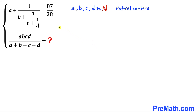Welcome to pre-math. In this video we have a system of equations: a plus 1 divided by b plus 1 divided by c plus 1 divided by d equals 87 divided by 38, where a, b, c and d are natural numbers. We are going to find the value of a times b times c times d divided by a plus b plus c plus d.